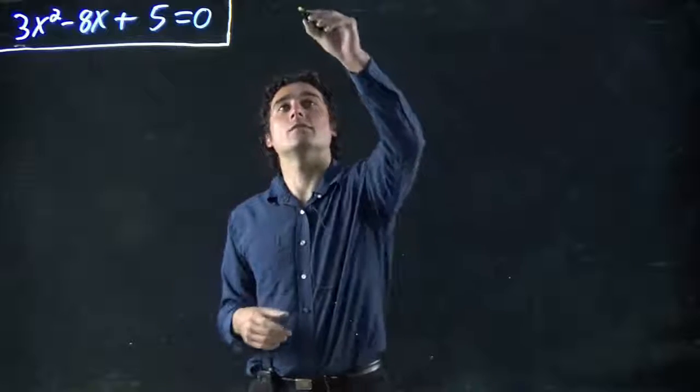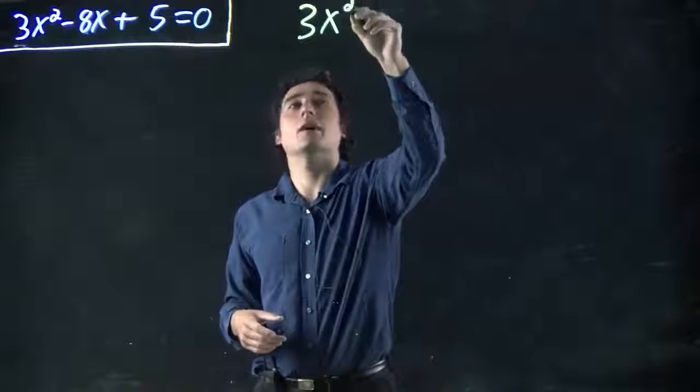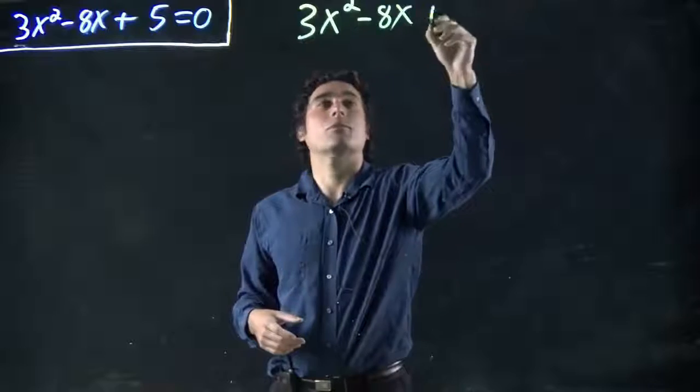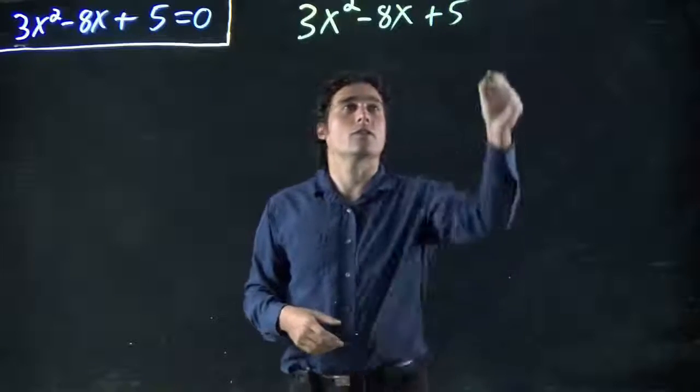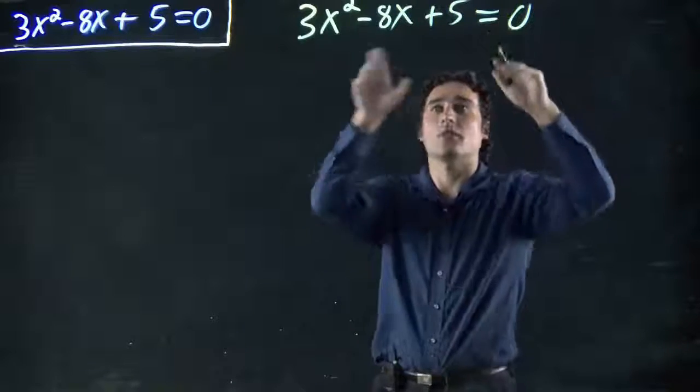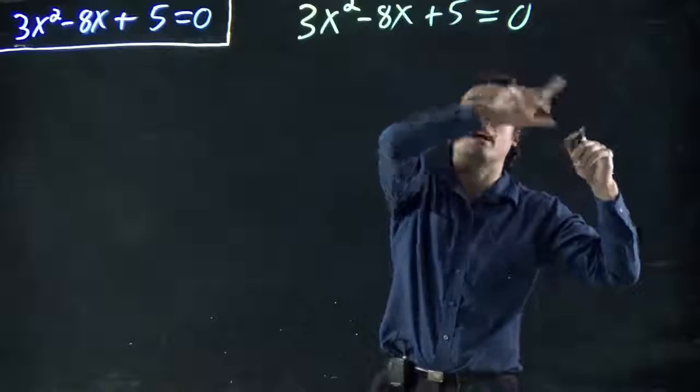First things first, what's our equation? We've got 3x squared minus 8x plus 5. So if we were doing factoring, 3x squared minus 8x plus 5 equal to 0.